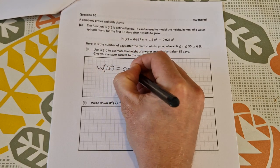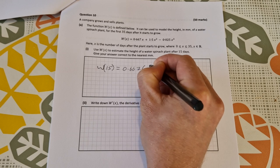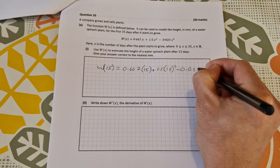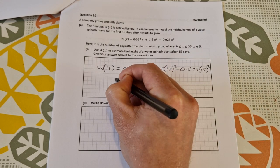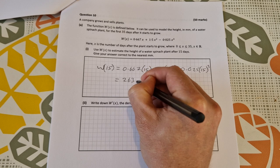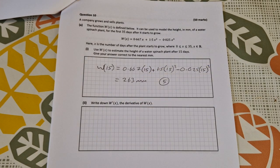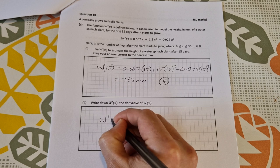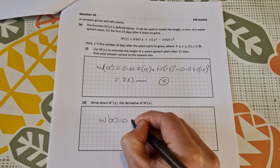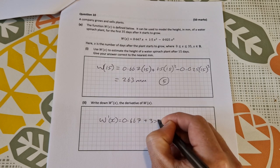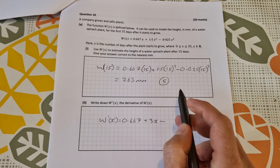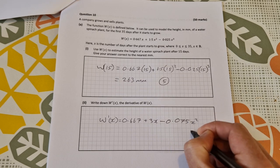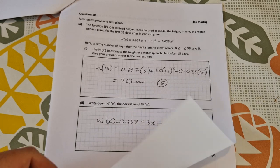So that is simply find w(15). w(15) is 0.667 times 15 plus 1.5 times 15 squared minus 0.025 times 15 cubed. Into your calculator it goes and you'll get 263 millimeters for five marks. Write down w'(x), the derivative of w(x). So differentiate this: w'(x) equals 0.667 plus 3x, that's 2 multiplied by 1.5, minus 0.075x squared. That's for another five marks.